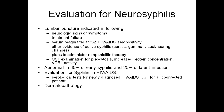Evaluation for neurosyphilis: lumbar puncture is indicated in some cases, such as when there are neurological signs or symptoms, treatment failure is present, serum reagin titer is greater than or equal to 1:32, and HIV is also positive, or there is other evidence of active syphilis like aortitis, gumma, visual or hearing changes, and you plan to administer non-penicillin therapy. CSF examination for pleocytosis, increased protein concentration, and VDRL reactivity is abnormal in 40% of early syphilis and 25% of latent infection.